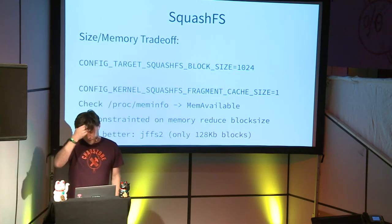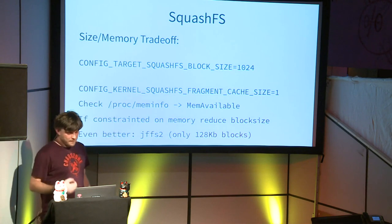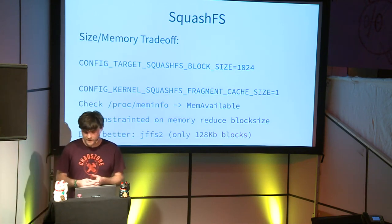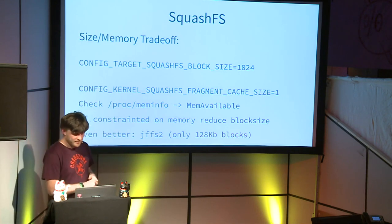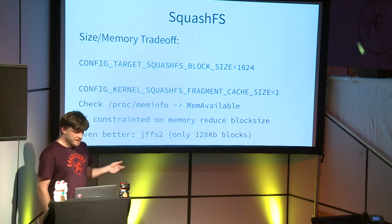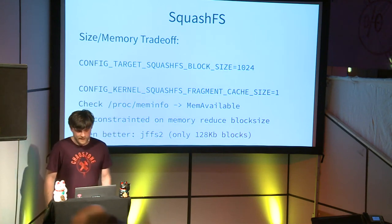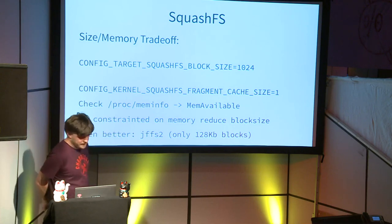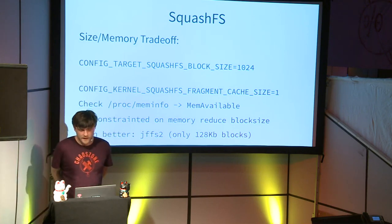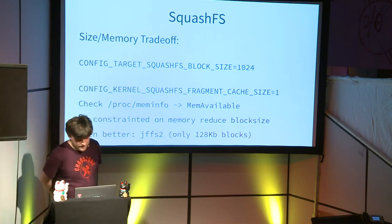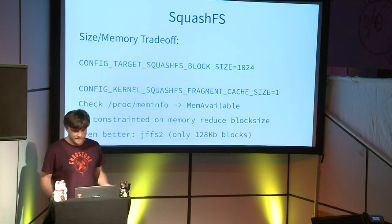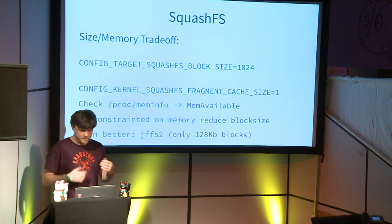Now for the kernel we move on to SquashFS. SquashFS is a read-only compressed filesystem that is created when the image is built. There are some options you can set that impact the final image size, the most important being the block size — this means the compression function gets up to 1 megabyte of data and can work more efficiently.